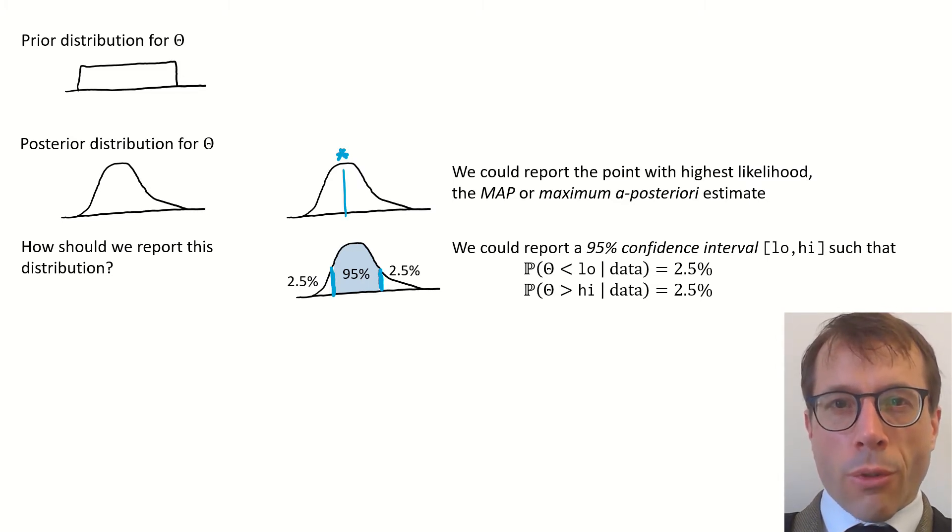If our distribution is all spread out, then the 95% confidence interval will be wide, and if the distribution is tight, then the interval will be narrow. This picture shows the standard way to find a 95% confidence interval. You find cutoff points low and high such that the probability of being less than low is 2.5%, the probability of being more than high is 2.5%, and then the probability of being inside the range low to high is 95%.